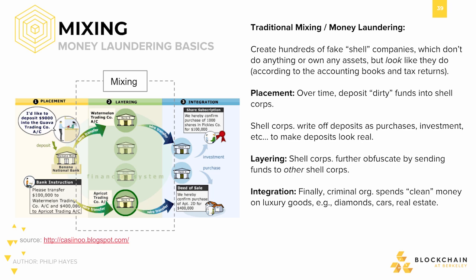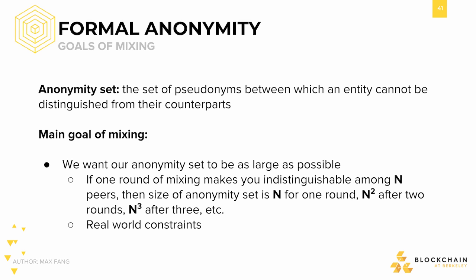The final step of the process is integration. This refers to when the clean money is reintroduced into the legitimate economy through the purchase of luxury goods — the end goal of all this money laundering. Mixing will attempt to simulate this process of money obfuscation by sending coins through several complicated processes. To better understand what it means to be anonymous in our context, let's formally define something known as an anonymity set — the set of pseudonyms between which an entity cannot be distinguished from their counterparts. The goal of mixing, then, is to maximize this anonymity set with our resources.